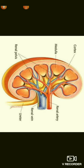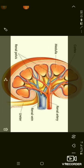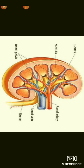In each kidney, about 1.25 million highly coiled tubules called nephrons are present. In a longitudinal section, the kidney is differentiated into two regions: the outer darker region is called the cortex, whereas the inner lighter region is called the medulla.